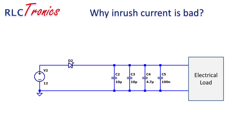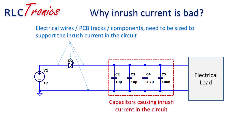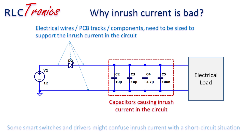Depending on its value and on your application, inrush current can be harmful for the upstream circuitry, PCB tracks, and even electrical wires when going beyond the limits. It can also generate wrong error diagnostics if it is confused by your protection system with a short circuit.